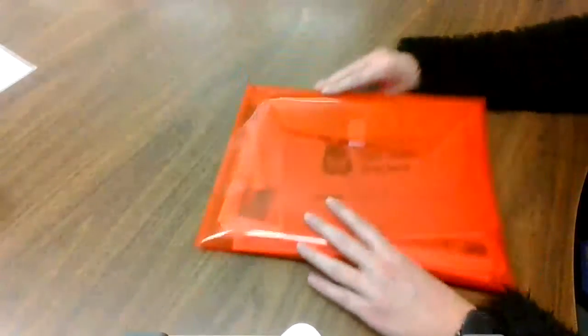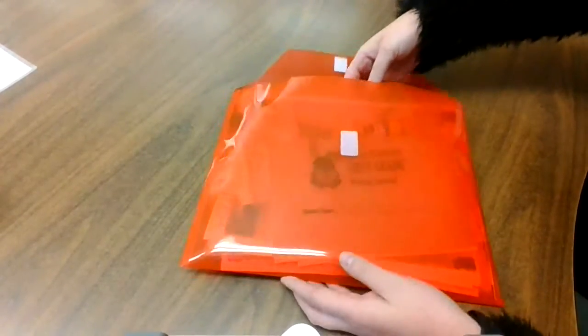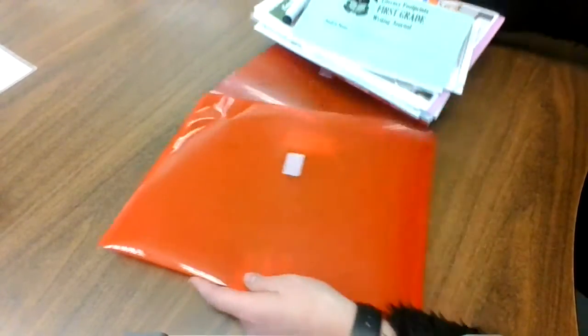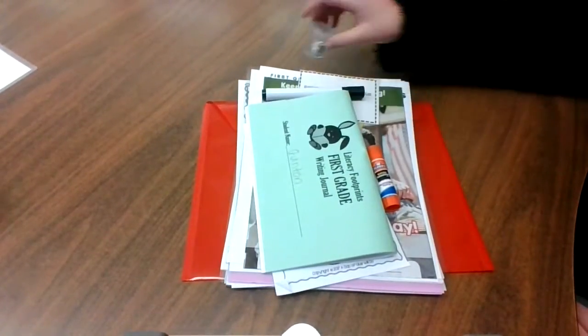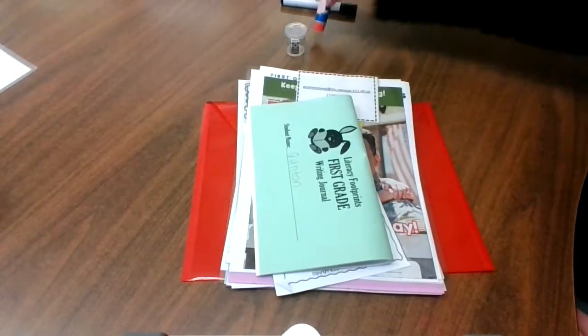I'm going to be using Quintin's to go through and show you everything that's in here. First you'll see some supplies at the top: a dice, an Expo marker, and a glue stick.